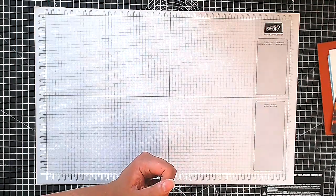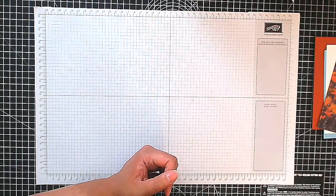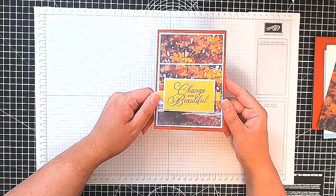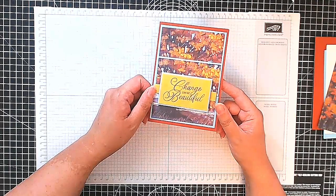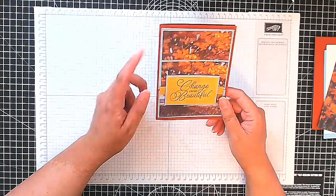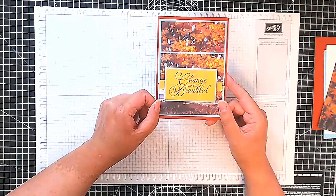Hello, this is Oshie from Crafting with Oshie and welcome to this card-making paper-crafting tutorial. This is the card I have to show you today. It's a very simple autumnal card. Change can be beautiful. I think it can be appropriate for many different occasions. And I love all these autumnal colours here. So let me show you how I made it.